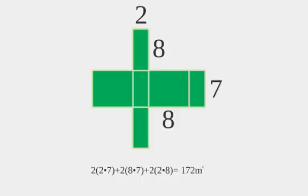If we wanted to do it a different way, notice that I did 2 times 7 and there's 2 of those shapes, 2 times 2 of those 8 by 7 rectangles and 2 of those 2 by 8 rectangles. So, add them all up together and remember our units would be meters squared because it is an area.